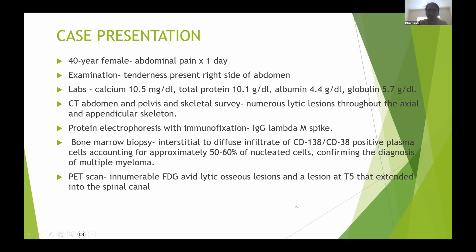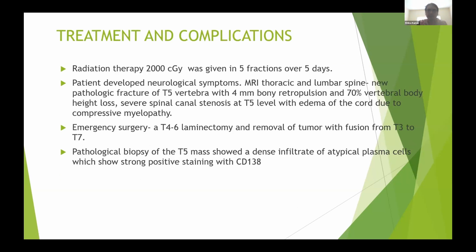The patient was discharged with follow-up with hematology/oncology. Radiation therapy was started — 2000 cGy given in five fractions over five days. A few days later at the outpatient clinic, she complained of neurological symptoms including back pain, with severe tenderness on examination. MRI of the thoracic and lumbar spine revealed a new pathological fracture of T5 vertebra with 4 mm bony retropulsion, 70 percent vertebral body height loss, severe spinal canal stenosis at T5, and cord edema due to compressive myelopathy — findings that were not present during the initial hospitalization.